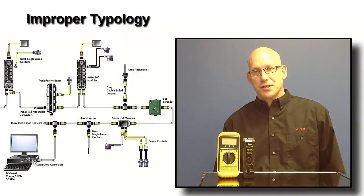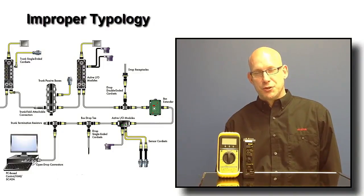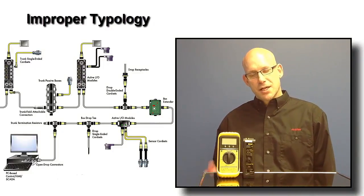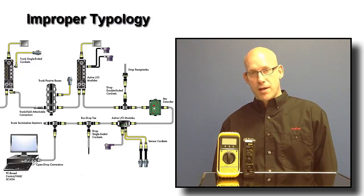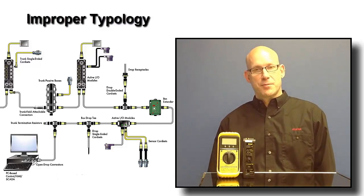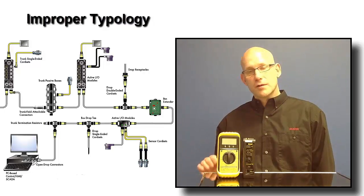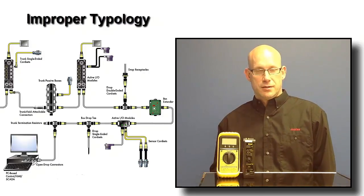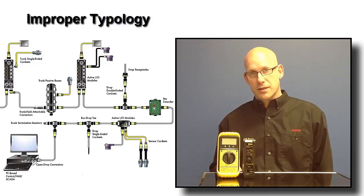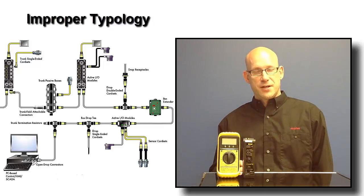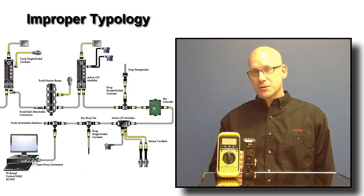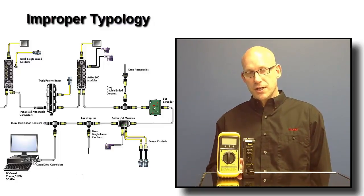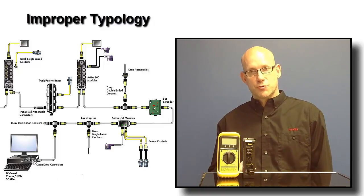Improper topology is a common issue on DeviceNet networks, and these meters check a number of different parameters that are an indication of improper topology. Whether it's too long of a trunk length, too great of a drop length, or too great of a cumulative drop length, you're going to see these problems manifest themselves in the bus power readings, CAN high-voltage readings, CAN low-voltage readings, and also that common mode voltage reading.